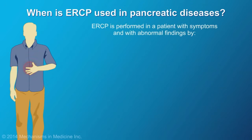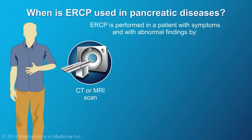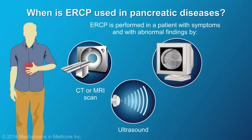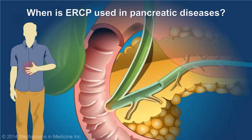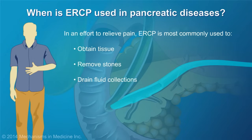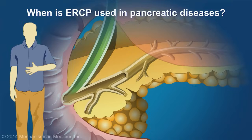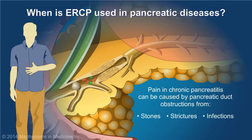ERCP is a therapeutic procedure performed in a patient with symptoms, abnormal findings by CT scan, MRI, ultrasound, or x-ray, together with abnormal lab results. In the pancreatic duct, in an effort to relieve pain, ERCP is most commonly used to obtain tissue, remove stones, and drain fluid collections when symptoms are present. Pain in chronic pancreatitis can be caused by pancreatic duct obstructions from stones, strictures, infections, or compression from fluid collection.